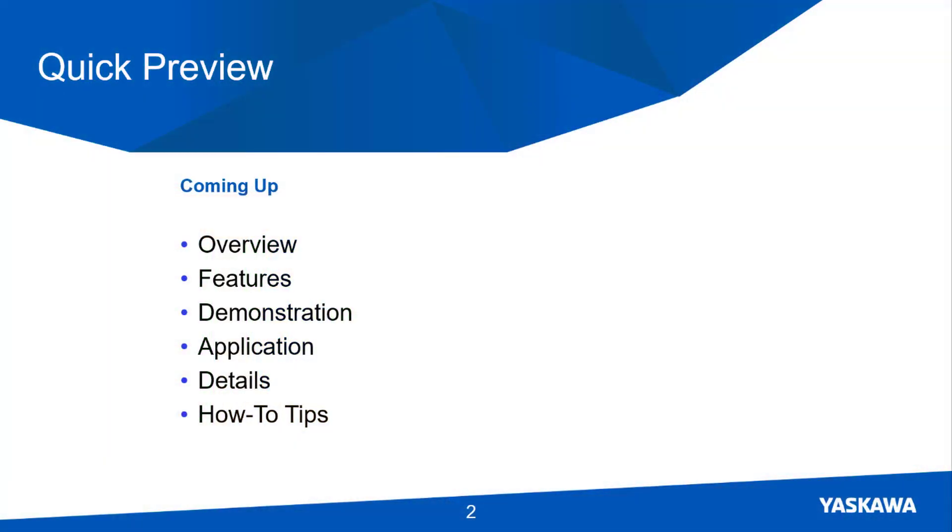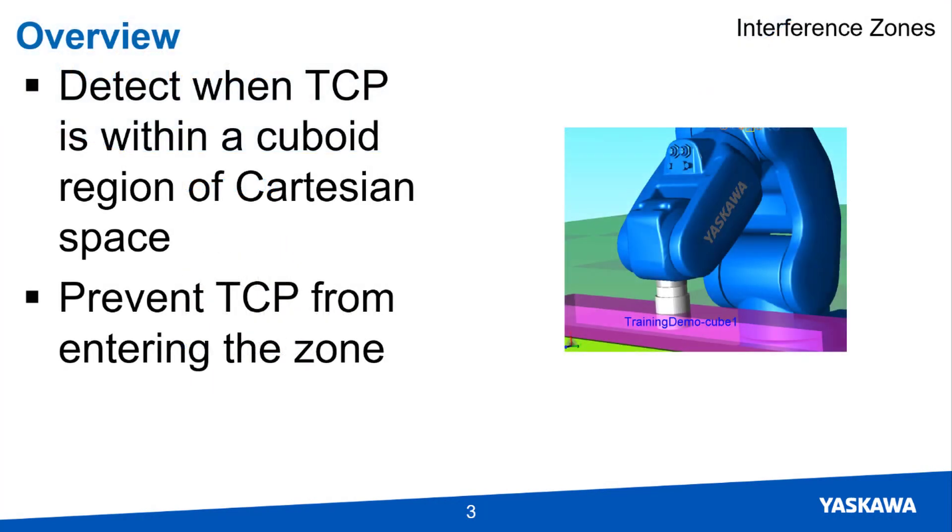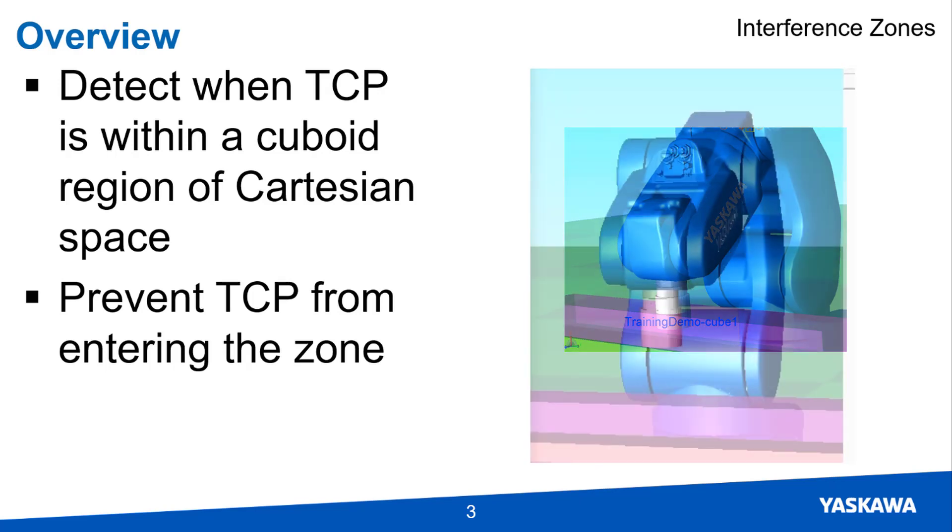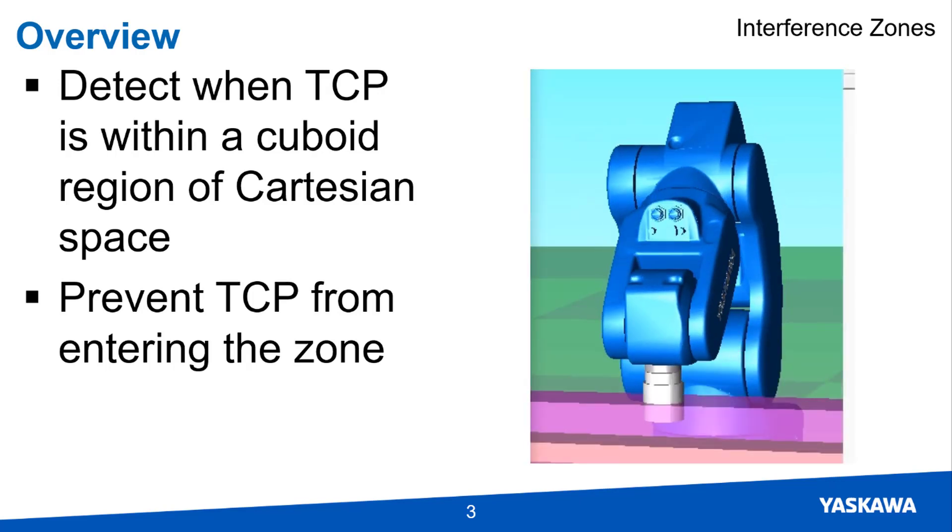Now let's look at this in more detail. An interference zone simply means that the controller can detect when the tool center point on a multi-axis mechanism lies within a cuboid region in Cartesian space.